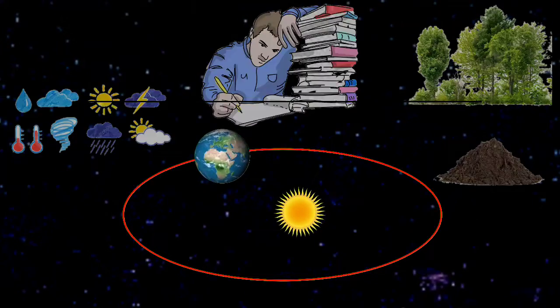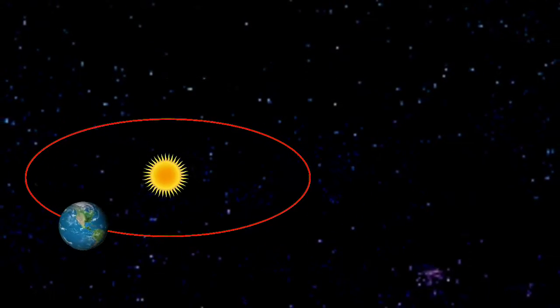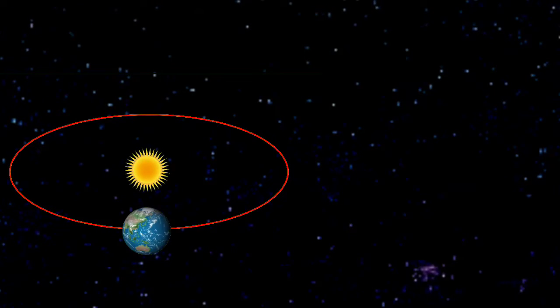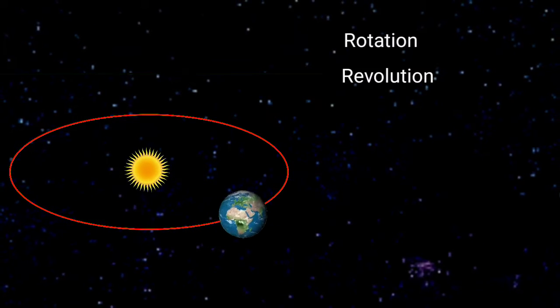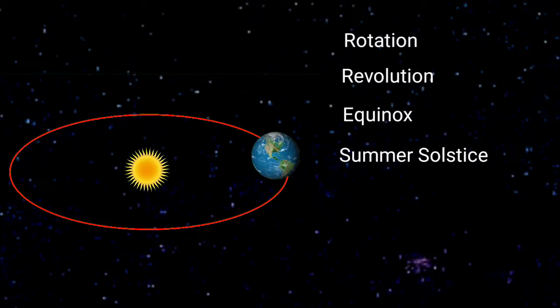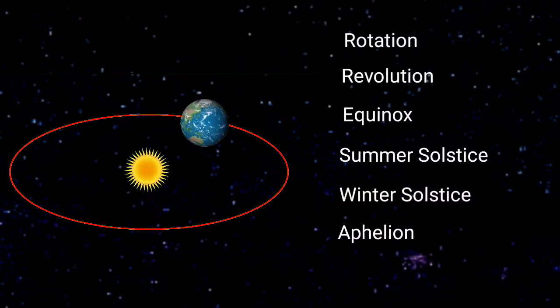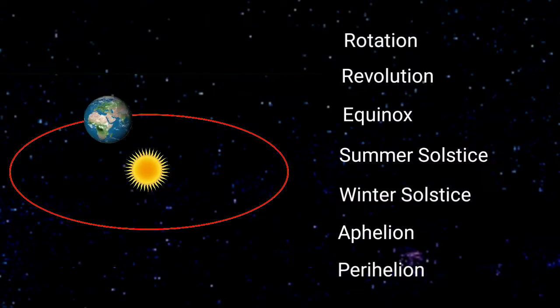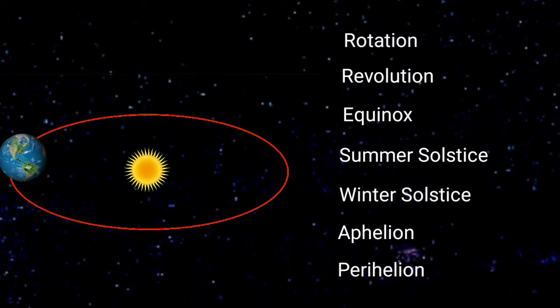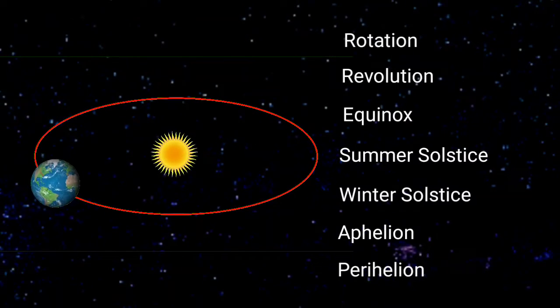And I think the basic reason for such difficulty is that they don't have a basic idea about rotation, revolution, equinox, summer solstice, winter solstice, aphelion, perihelion, so many things that are directly or indirectly related to this chapter.